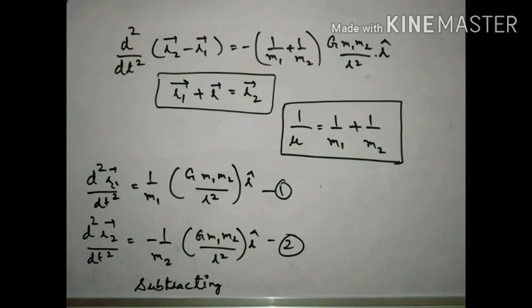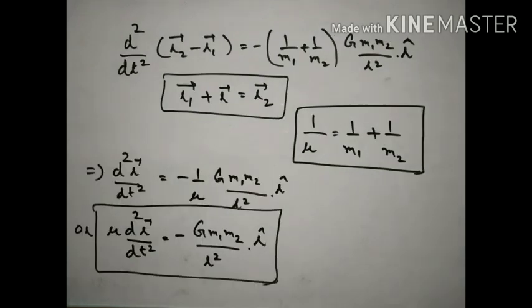We combine both bodies to get the reduced mass. The formula to keep in mind is: 1/mu = 1/m1 + 1/m2. Using both equations, the final equation we get is: d²r/dt² = −(1/mu)·G·m1·m2/r²·r-cap. Taking mu to the left-hand side gives the equation of motion for the reduced mass.